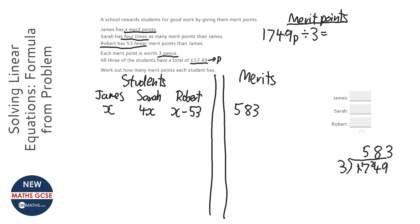Now it says here that all three of the students have a total of 583. So what I'm going to do is add James's to Sarah's and to Robert's, and they're going to equal 583.